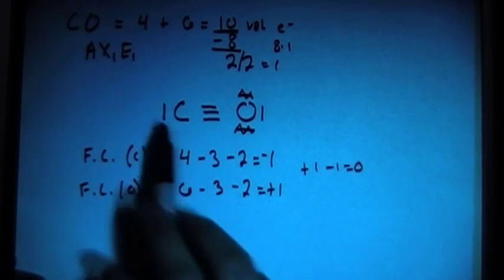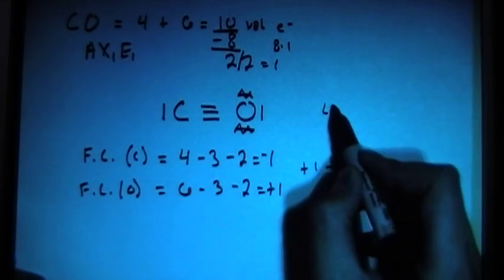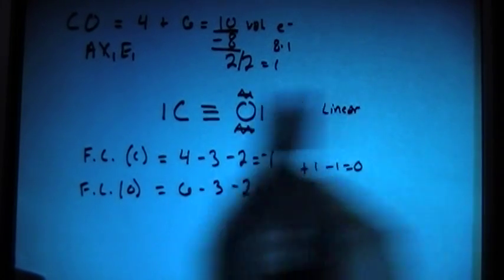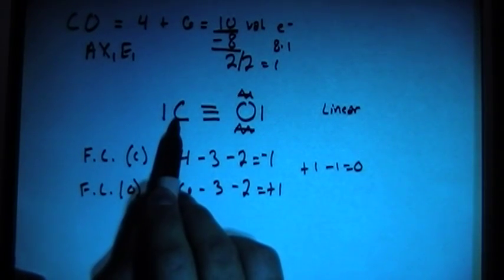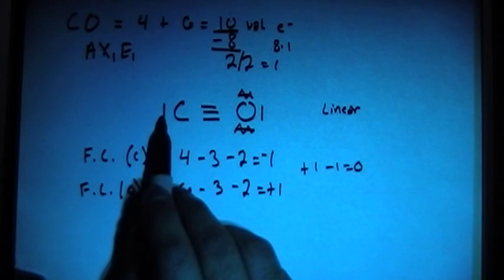So now we can see that this is going to be a linear shape, because carbon being the central atom has two things bonded to it. So two things, it's going to be linear.